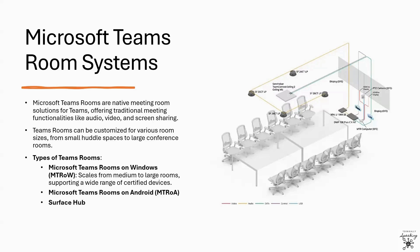Microsoft Teams Rooms can scale to different room sizes, using a wide variety of certified audio and video devices based on the size and use of the room. By selecting the right front-of-room devices and console, combined with microphones, speakers, cameras, and displays appropriate for your space, Microsoft Teams Rooms can be deployed into spaces of any size, from small huddle spaces to large conference spaces and board rooms. There are three types of Microsoft Teams Rooms: Microsoft Teams Rooms on Windows, Microsoft Teams Rooms on Android, and Surface Hub.